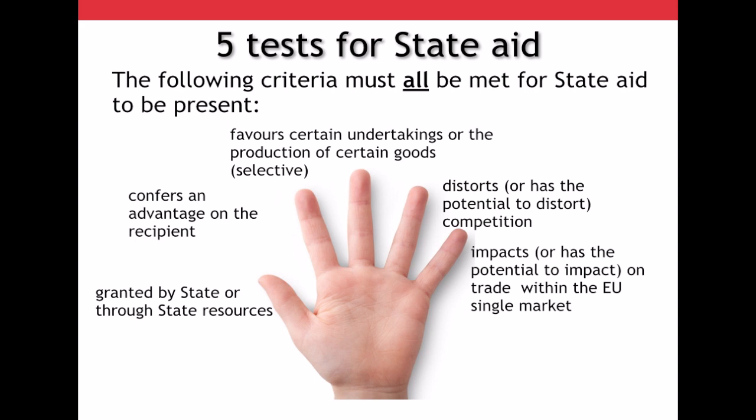Finally, here again are the five tests — all of which have to be met for state aid to be present. The aid has to be granted by the state or through state resources. The aid has to confer an advantage upon the recipient. The aid must favour certain undertakings or the production of certain goods, so be selective. The aid must distort or have the potential to distort competition. And the aid must impact or have the potential to impact upon trade between member states.